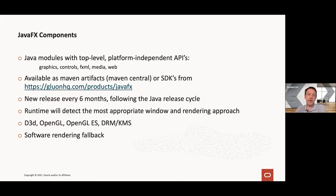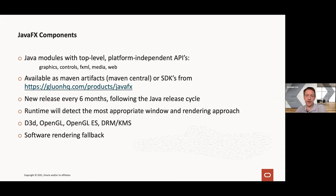There is a release every six months and we follow the Java release cycle — plus or minus one week. That means typically a release is done somewhere in March, and then another major release is done somewhere in September.